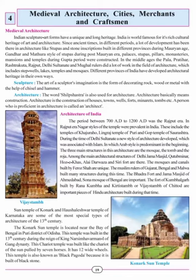The Sun Temple of Konark was built in the 13th century during the reign of King Narasimha Varman I of the Ganga Dynasty. This chariot temple was built like the chariot of the sun god pulled by seven horses, and has 12 wide wheels. This temple is also known as the Black Pagoda because it is built entirely of black stone.